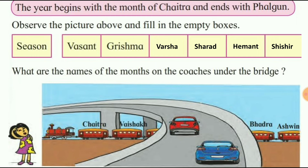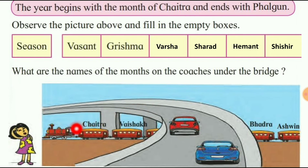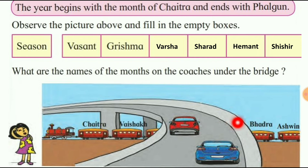Look at this picture — यहाँ पर एक bridge बना हुआ है. गाड़ी जा रही है ऊपर से bridge के और नीचे भी गाड़ी है. Bridge के ऊपर जो names दिये हैं वो write करना है हमें: Chaitra, Vaishakha, Bhadrav, Ashwin.